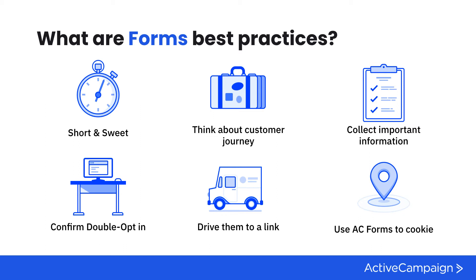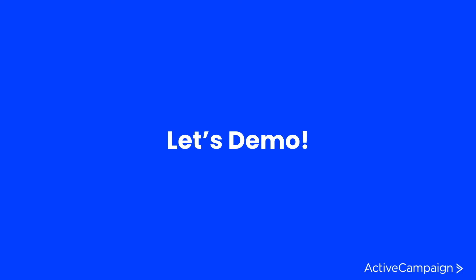One of the two ways to cookie your contacts through site tracking is by using ActiveCampaign forms. Contacts get cookied upon form submission, and through site tracking you're then able to follow not only their link clicks but the pages they're visiting on your website — really giving you the opportunity to follow that customer journey and see exactly what the contact is doing. Let's dive into the platform and build a form together.